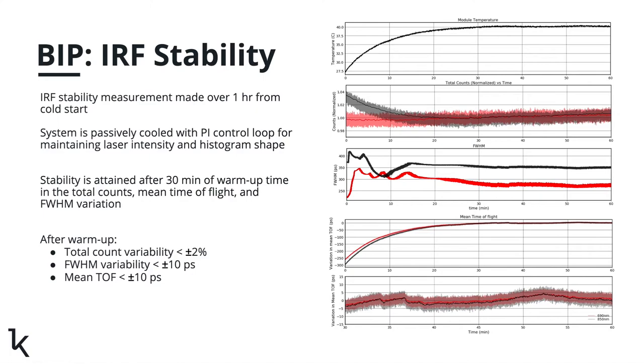The final measurement in the BIP protocol looks at the stability of the system as measured by changes in the IRF. Again, through looking at the IRF, we take into account the performance of both the lasers and the detectors during the measurement. Our system is passively cooled and uses an in-module control loop to stabilize the output power of our lasers. We show our measurements from a cold start and see that within 30 minutes we reach stability and achieve minimal variation in both detected counts and IRF temporal performance.